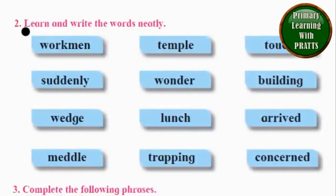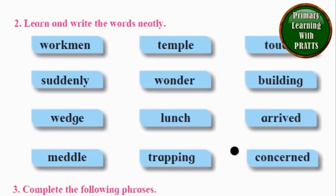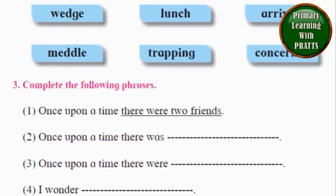Now let's continue with the lesson exercise. It says: learn and write the words neatly. The words are: workman, temple, touch, suddenly, wonder, building, wedge, lunch, arrived, meddle, trapping, concerned.